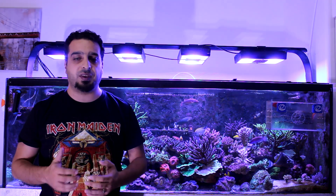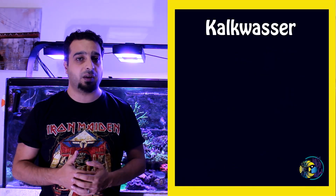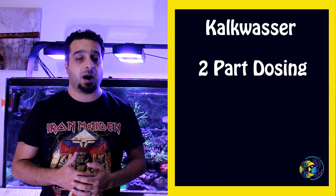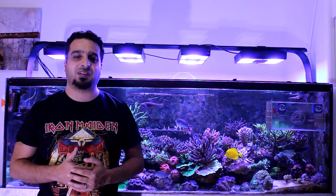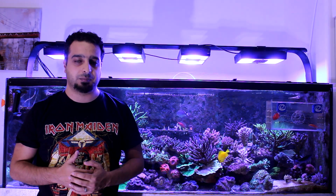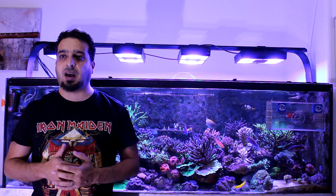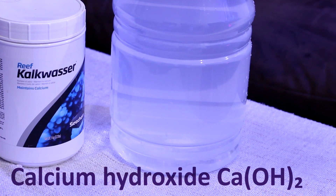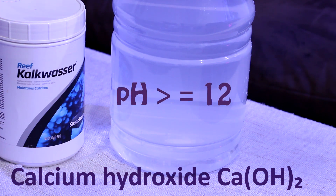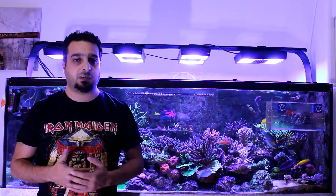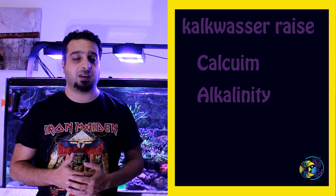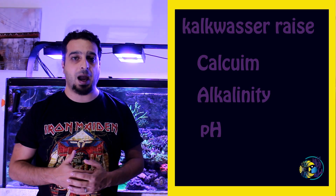The most popular of these balanced methods are Kalkwasser, two-parts, and calcium reactor. Today I'll start talking about Kalkwasser. Kalkwasser is the German word for lime water — it is a highly concentrated solution of calcium hydroxide in water with a high pH of more than 12.